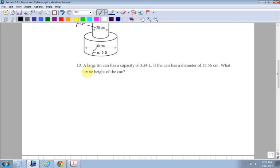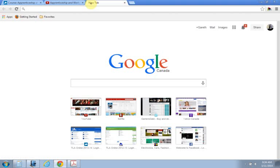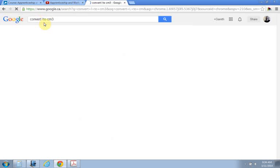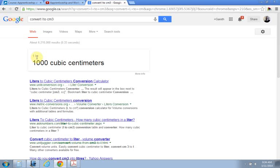Last question on this page for cylinders. A large tin can, so you have to know that a tin can is a cylinder and not like a box or a cube or something. So you must know that a can is a cylinder, and has a capacity of 3.24 liters. If you're unsure of the conversion from centimeters to liters, something good that you can do is you can actually go right online and you can convert liters to centimeters cubed, which is what we want. So if I look here, I already see that one liter is equal to 1,000 cubic centimeters for one liter.